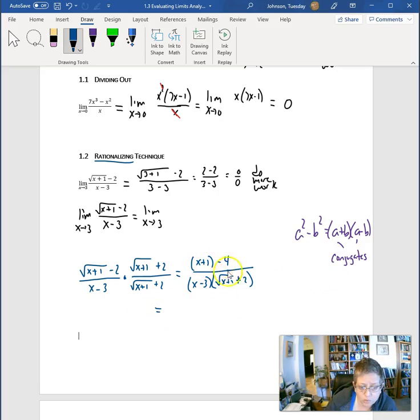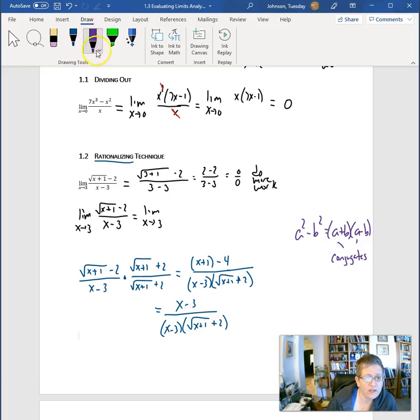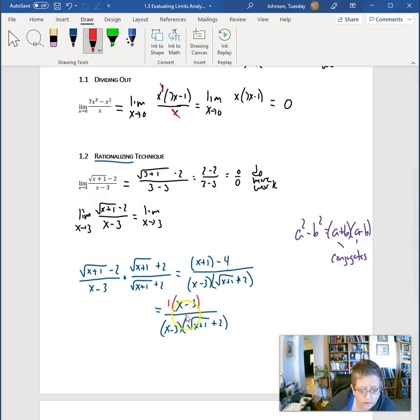We see the x plus 1 minus 4 is x minus 3. That's the same x minus 3 we had in the denominator to start with. We can always factor out a 1 and make it look like a factor. The x minus 3's cancel out and we're left with 1 over the square root of x plus 1 plus 2.